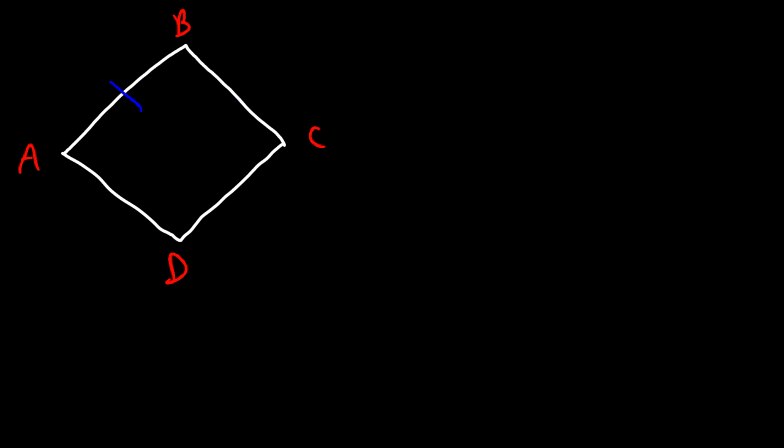Once you prove that it's a parallelogram, you can show it's a rhombus if a pair of consecutive sides are congruent, or if you can show that a diagonal bisects the angles into two congruent parts — that's also a rhombus.